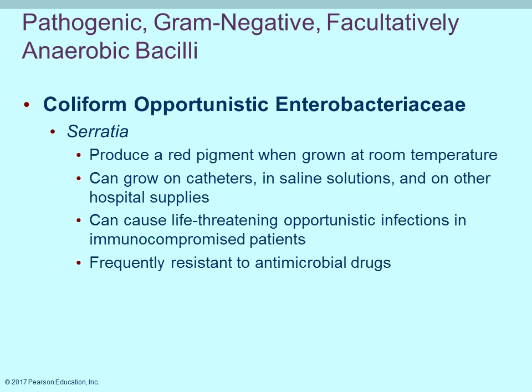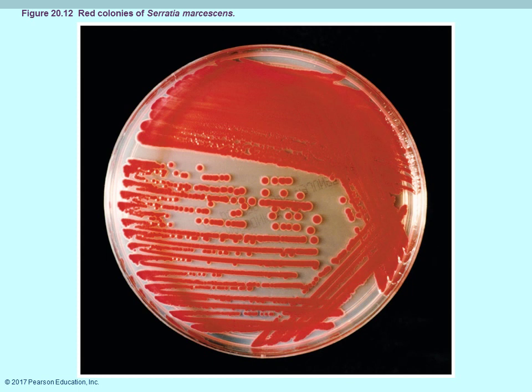Serratia is unique in that it produces a red pigment when grown at room temperature — at 37°C it is a beige color. From a healthcare standpoint, Serratia can grow on catheters, saline solution, and intubation tubes. In a hospital setting it can cause opportunistic infections in immunocompromised patients, and there is growing resistance to antimicrobial drugs.